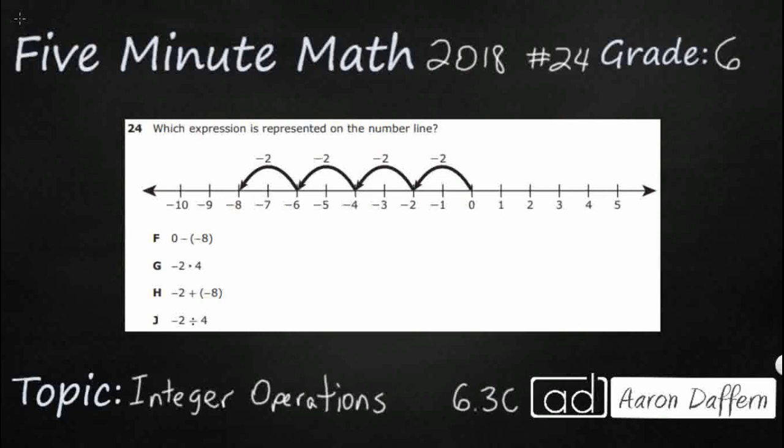So we have a number line, and we've got these little arrows. I guess these are jumps. Looks like they're starting at 0, and they're kind of moving back like this. And we're just supposed to match one of these expressions, F, G, H, J, to this. Well, these are all integers, right? So we've got whole numbers that are either positive or negative. Let's see if we can just figure out what these equal here. So the numbers I see are 0, negative 2, negative 4, negative 6, negative 8, and then a whole bunch of negative 2s. Let's see if we can just simplify some of these and see what we come up with.